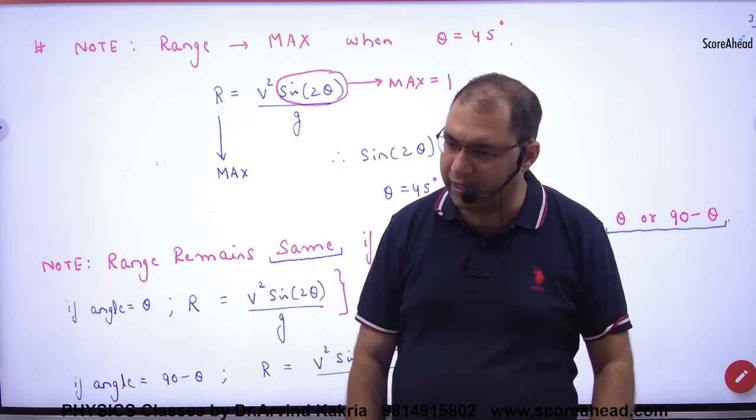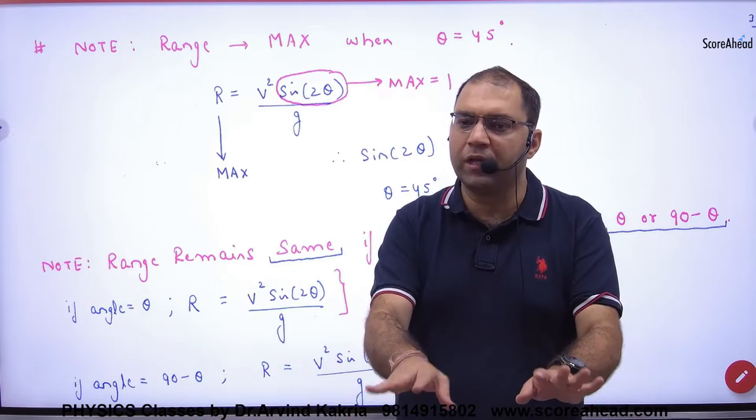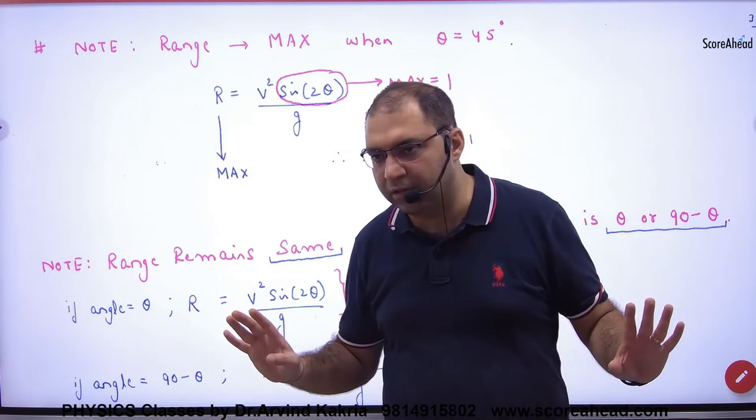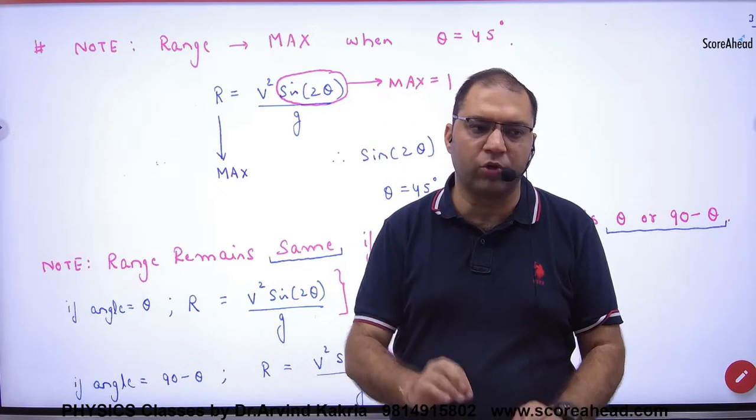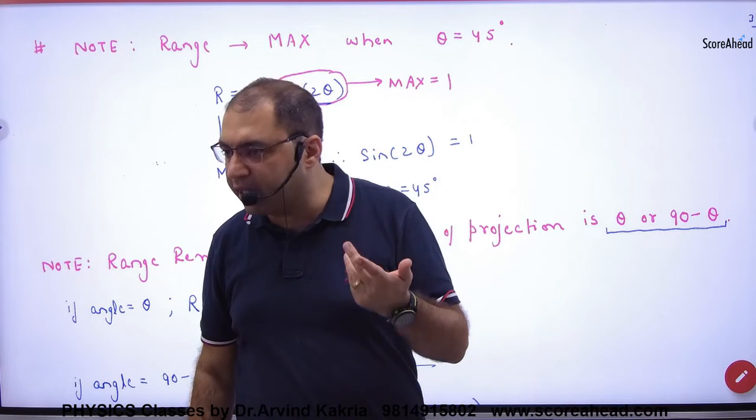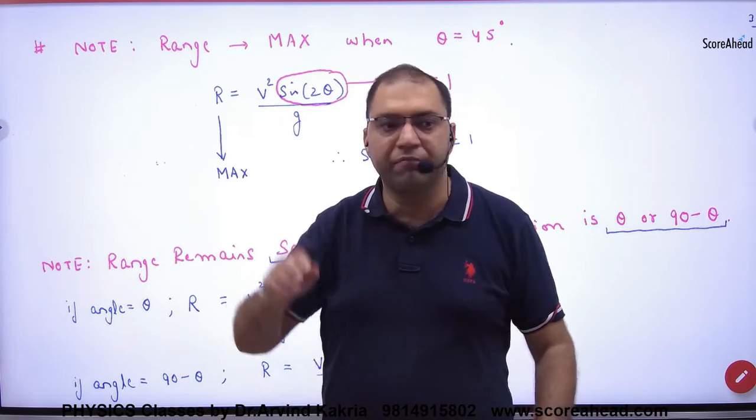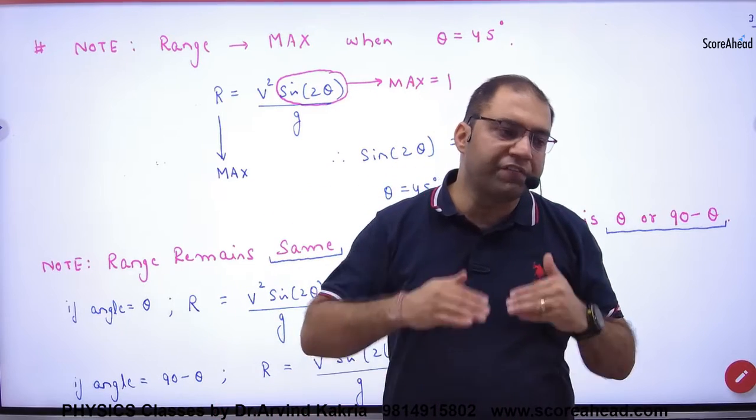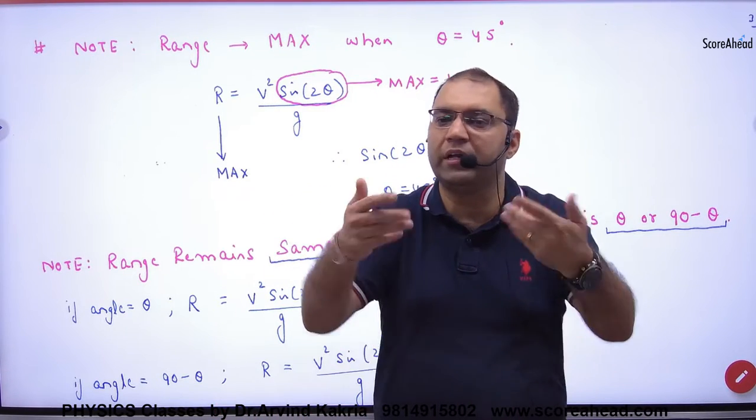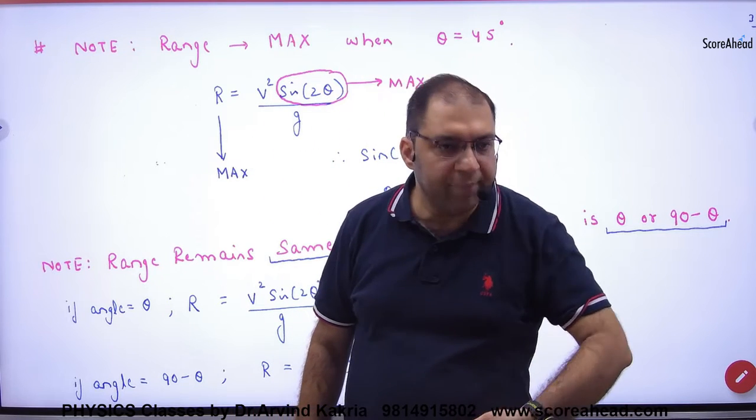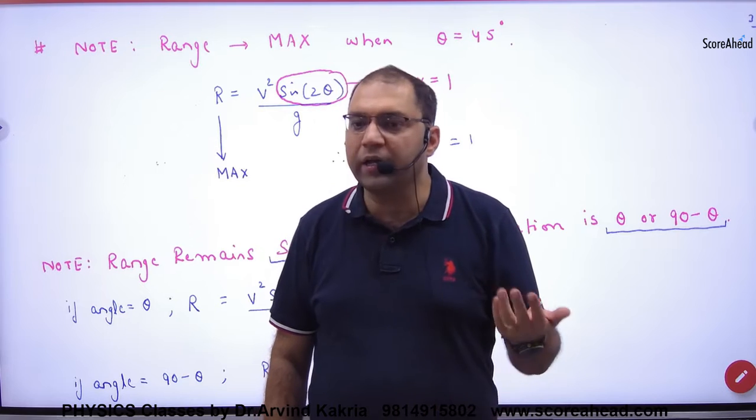I have called all students and said that you will keep the velocity at 50 meters per second and throw that projectile. You will say that you can increase the velocity - yes, if you increase velocity then no problem. But I am saying that you can't increase the velocity beyond 50 meters per second, and you have to cover the maximum distance on the ground. So what will you do?